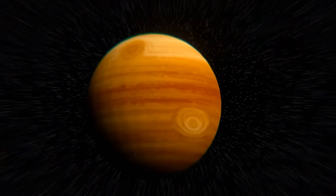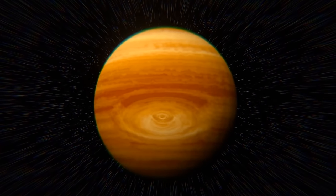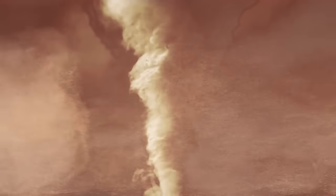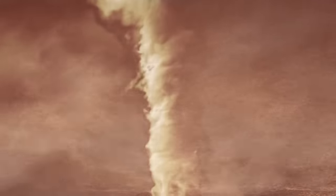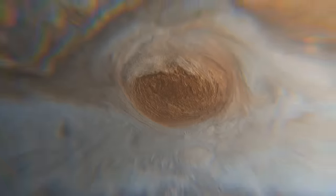Astronomers think that once, several enormous storms could have come together and created the Great Red Spot. And now it keeps going by constantly drawing cool gases from below and hot gases from above. Plus, the storm might be absorbing other smaller vortices. This makes the Great Red Spot even more powerful.